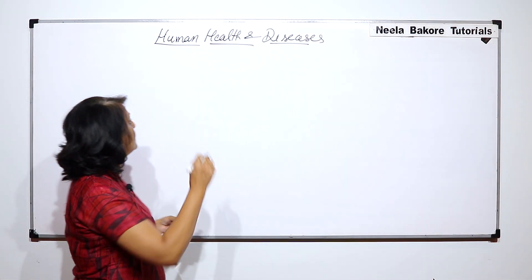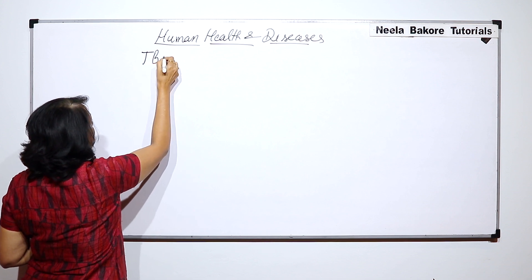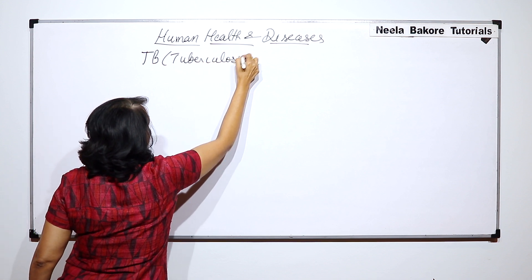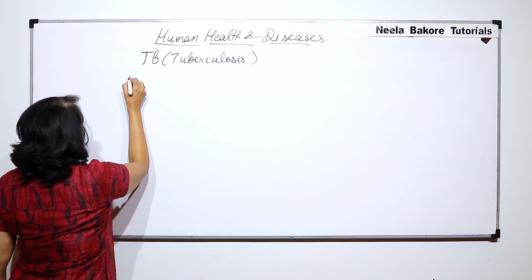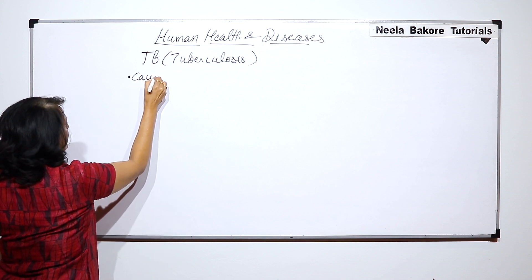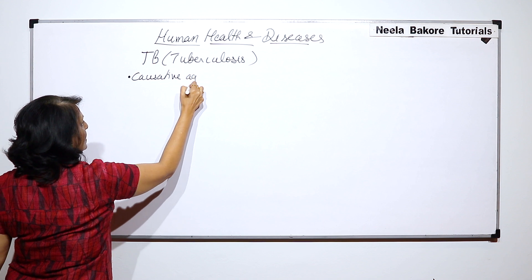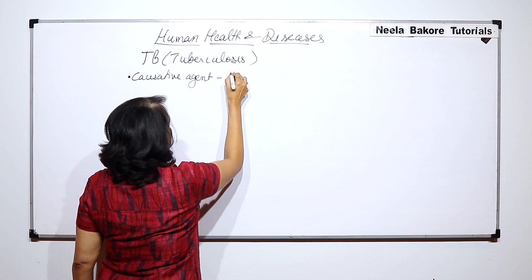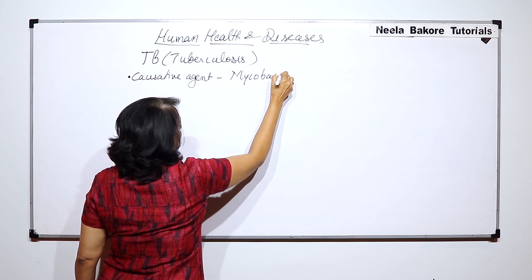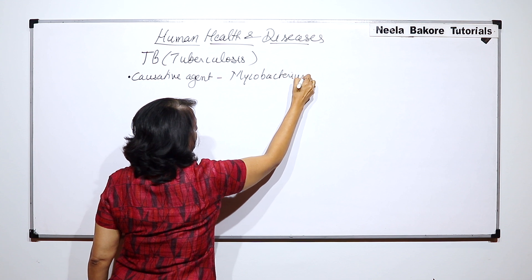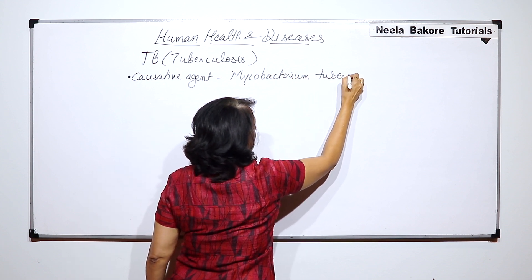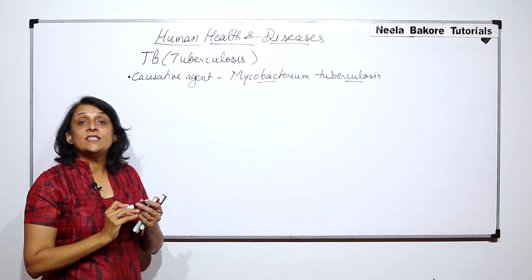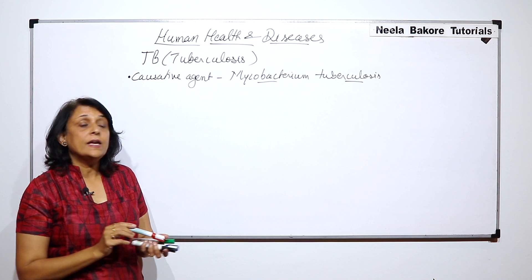The disease is commonly known as TB, that is tuberculosis. It's a bacterial disease. The causative agent is Mycobacterium tuberculosis, and this bacterium was discovered by Robert Koch.